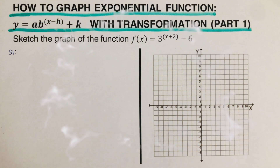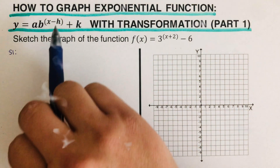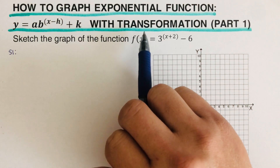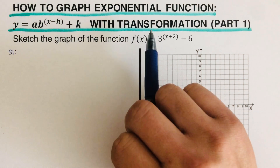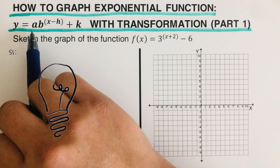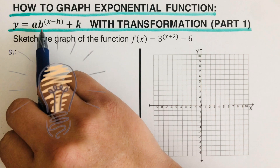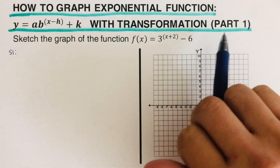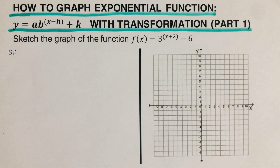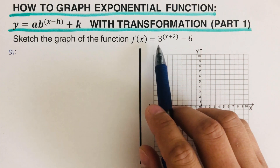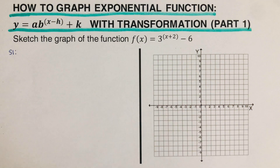Hello everyone. In this video we're going to sketch the graph of an exponential function with transformation. The equation is y equals a·b raised to the power (x minus h) plus k. Before we jump into the first example, there are some steps that we need to follow in order to graph this function.